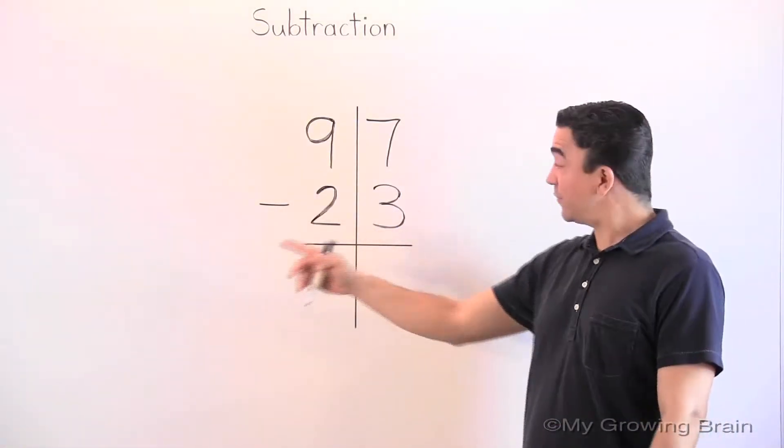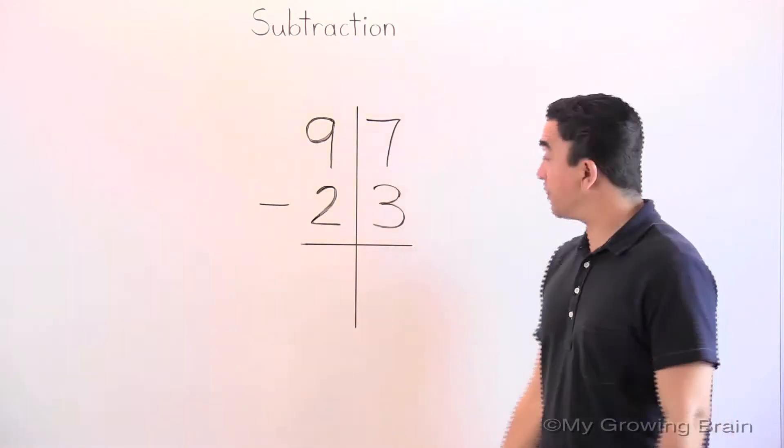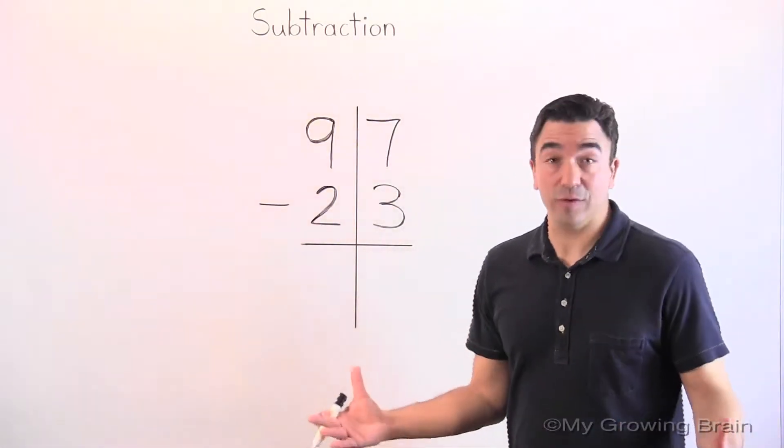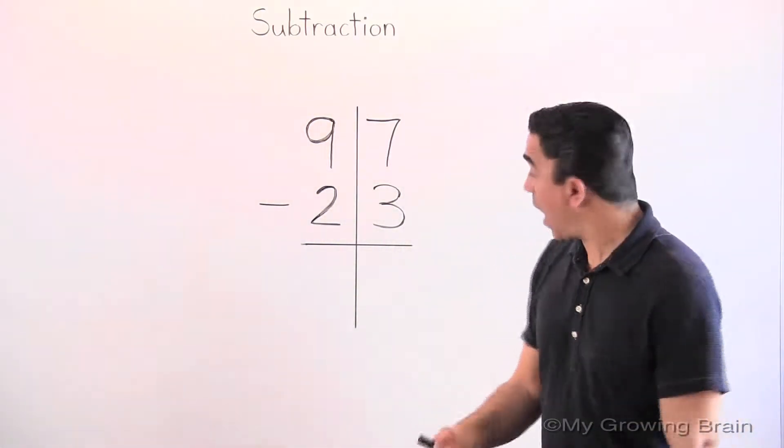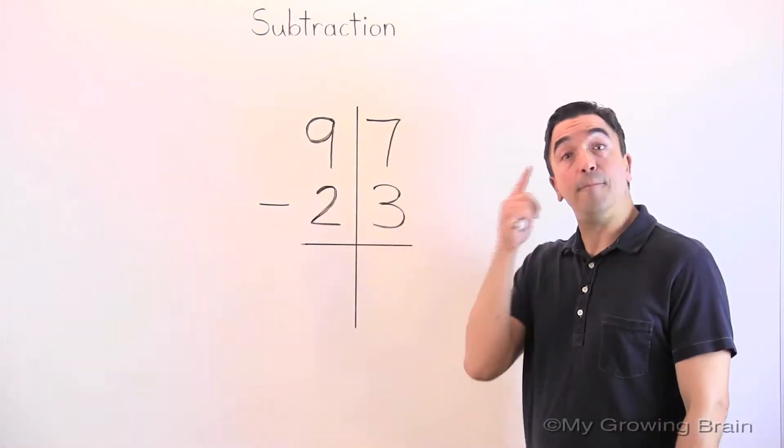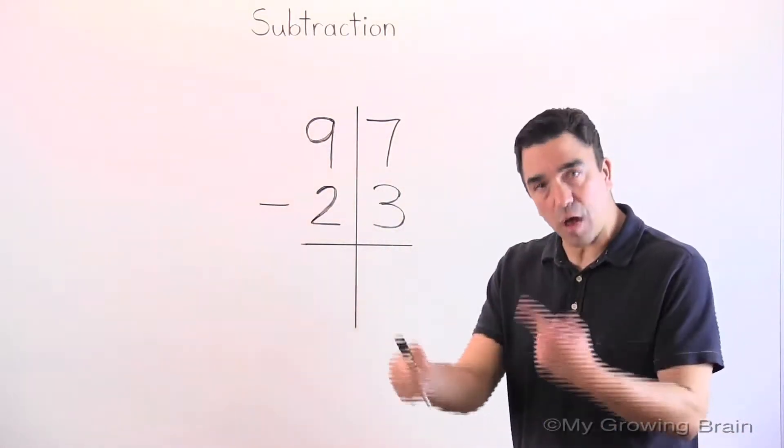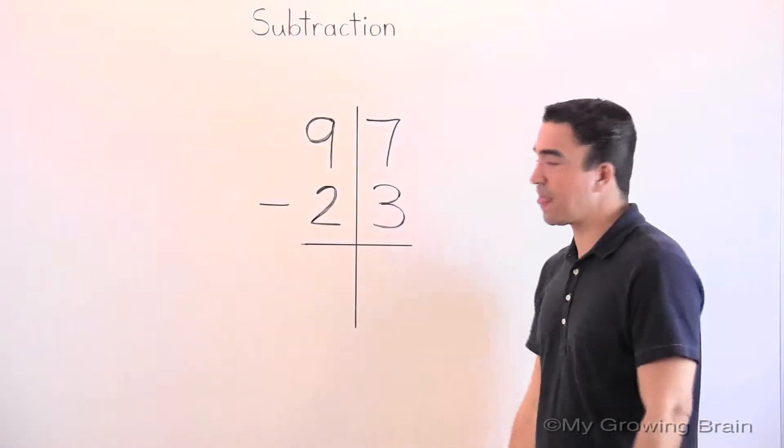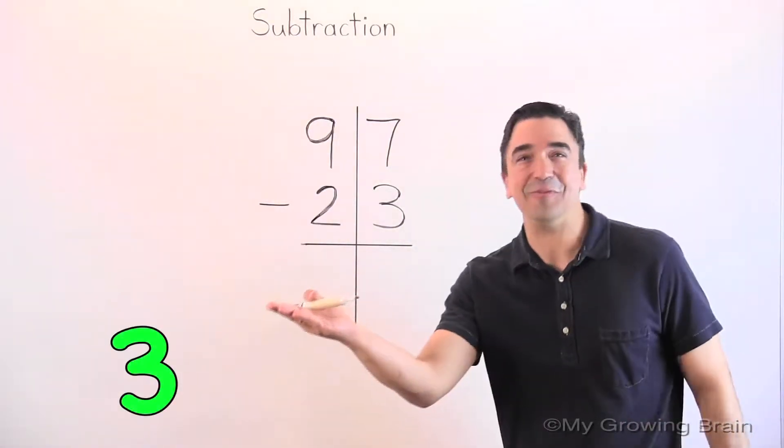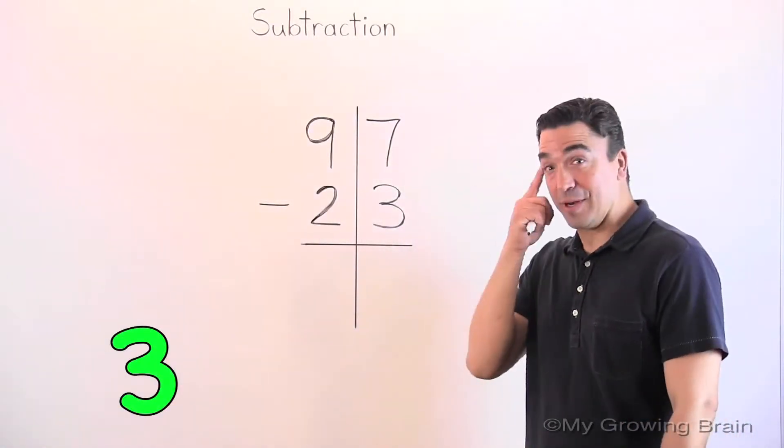7 minus 3. Well, there's a little strategy I like to use called counting up. I'll take the smaller number and put it in my head and count on to 7. Okay. Oh, there's my 3. Okay, here we go. Put the 3 in my head.